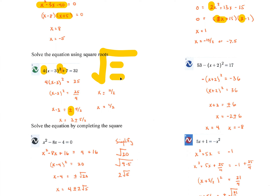The square root of 25 is 5 and the square root of 4 is 2, so we get 5 halves. Then we add the 3 and put it first: 3 plus or minus 5 halves. 3 plus 5 halves is 11 halves, or 5 and a half. And 3 minus 5 halves — 3 minus 2 and a half — is 1 half.